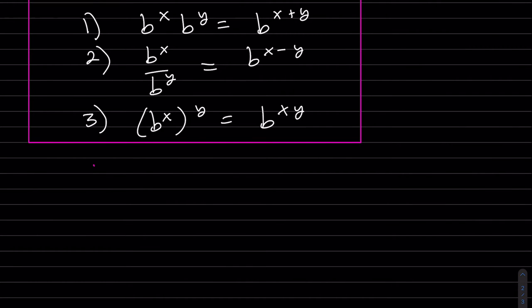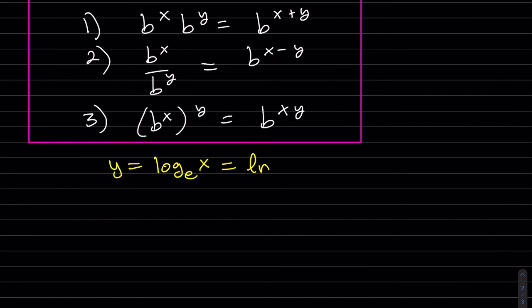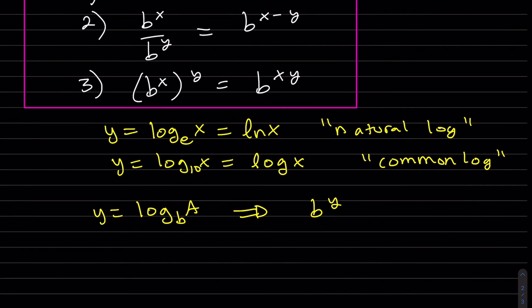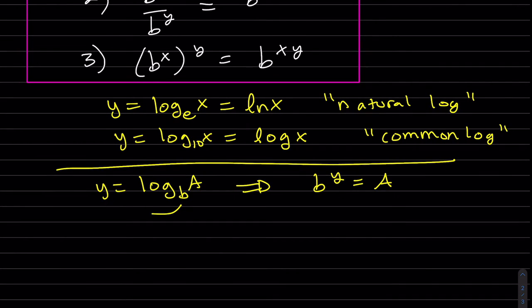A couple other little properties. Base e is natural log. Base 10 is just our, this is the natural log. This is the common log. And to convert. So it's b to that power is equal to a, the argument.